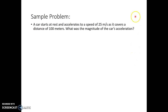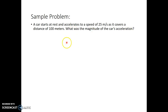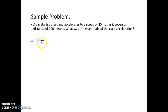The reason why we're going to use these four equations will be demonstrated by this sample problem. Let's say that a car starts at rest and accelerates to a speed of 25 meters per second as it covers a distance of 100 meters. It's always helpful when doing physics problems to write down what you know. As we read this, we see a car starts at rest — that tells me my initial velocity, which I write as v₀, is 0 meters per second.